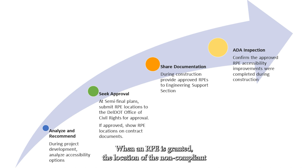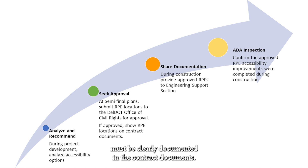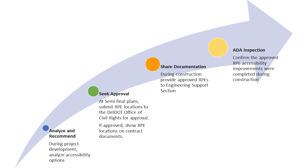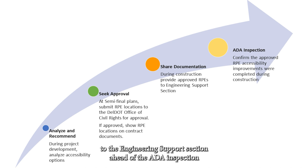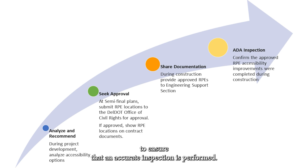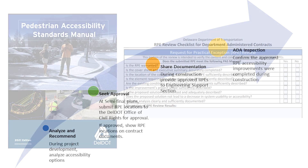When an RPE is granted, the location of the non-compliant accessibility facility and non-compliant element must be clearly documented in the contract documents. Additionally, all approved RPEs must be provided to the engineering support section ahead of the ADA inspection to ensure that an accurate inspection is performed.